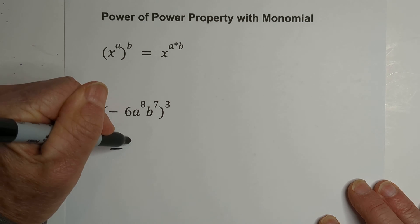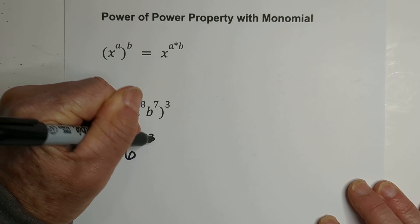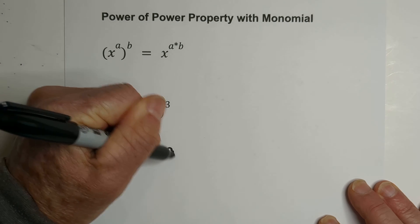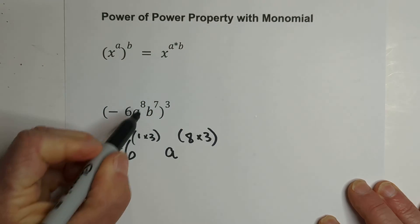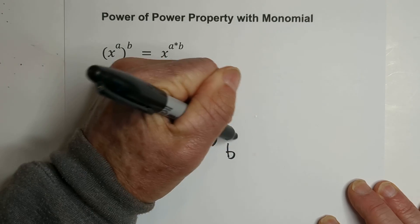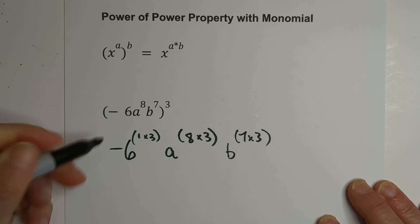We have negative 6, and that's to the first power, times 3. And then we have A, 8 times 3, because it's raised to the 8th power, and then B, and that's 7 times 3.